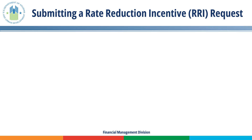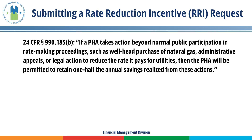In accordance with HUD Regulation 24 CFR 990.185, if a PHA takes action beyond normal public participation in rate-making proceedings, such as wellhead purchase of natural gas, administrative appeals, or legal action to reduce the rate it pays for utilities, then the PHA will be permitted to retain one-half the annual savings realized from these actions.